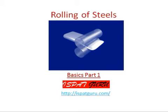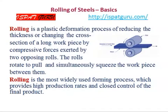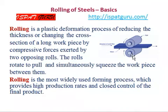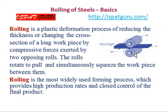Welcome to the Basics of Rolling of Steels Part 1. Rolling is a plastic deformation process of reducing the thickness or changing the cross-section of a long steel workpiece by compressive forces exerted by two opposing rolls. The rolls rotate, pull the workpiece, and simultaneously squeeze the workpiece between them. Rolling is the most widely used forming process, providing high production rates and close control of the final product.